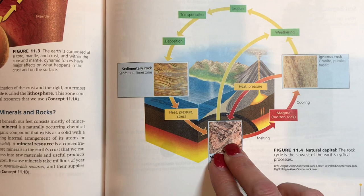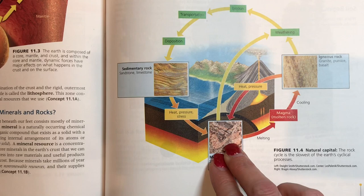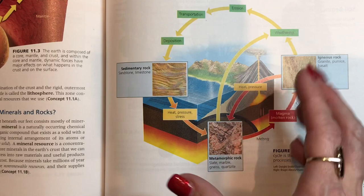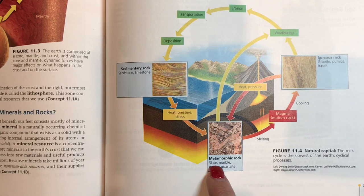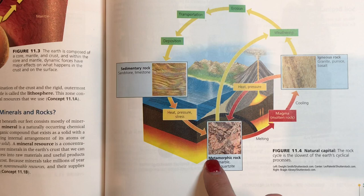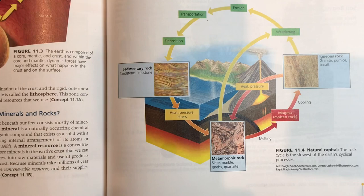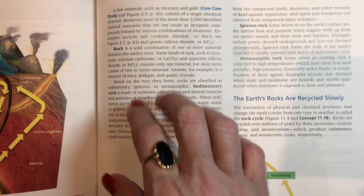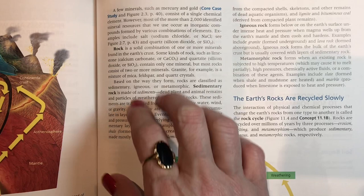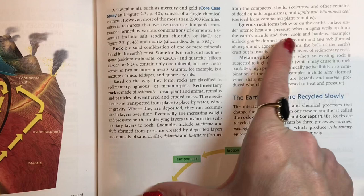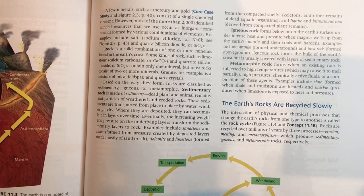Metamorphic rock forms under high heat and pressure, squeezing material together so you have thick bands of minerals with next to no pores — all the air spaces are gone. Marble and some forms of slate are great examples. Remember that granite and basalt are what make up all of the tectonic plates on our planet.